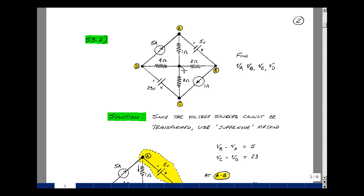This lesson deals with supplemental problem 3.2. You can find this problem in the ECE 201 ebook in the Chapter 3 Supplemental Problems on page 2. Given this circuit, can you find the four node voltages: V sub A, V sub B, V sub C, and V sub D?